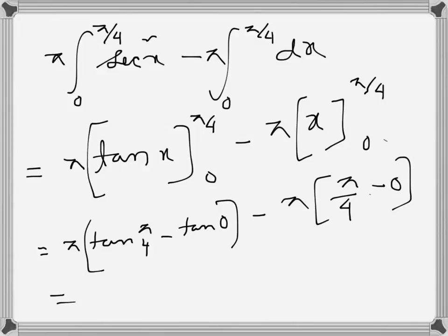Tan(π/4) is 1 while tan(0) is 0, so this one is just π. And here it will be π²/4. So the result is π minus π²/4, which equals (4π - π²)/4 cubic units. That will be the generated volume.